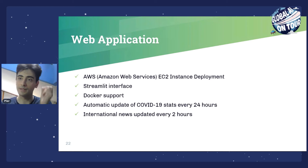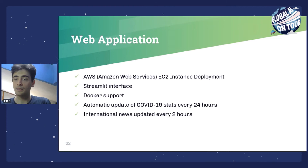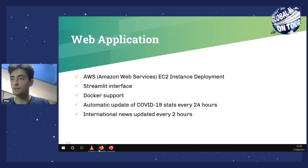I'll now introduce the web application I created for COVID modeling. It was deployed on Amazon Web Services on an EC2 instance, using Streamlit for the interface, with Docker support. The code is completely open source, so you can download it and play with the dashboard on your own machine. The application fetches COVID case data every 24 hours and news updates every two hours.